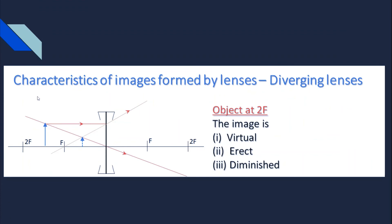For a diverging (concave) lens, no matter where you place the object, the image will always form between O and f on the same side as the object. It will always be virtual, diminished, and upright. The first ray passes through the optical center, while the other ray diverges from the lens but appears to originate from the principal focus. Producing the line backwards through the principal focus, where the two rays converge is the position of the image.